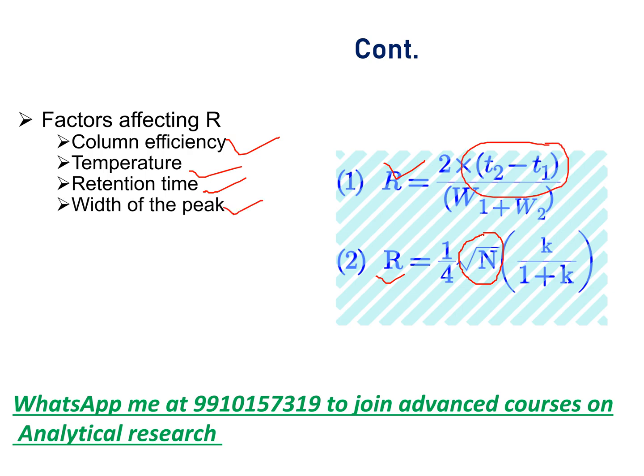Width of the peak — on increasing the width of the peaks, resolution is decreased because resolution is inversely proportional to the width of the peak. Buffer — on increasing buffer concentration, resolution is increased because peak sharpness is increased.